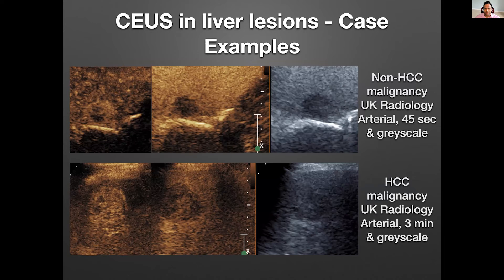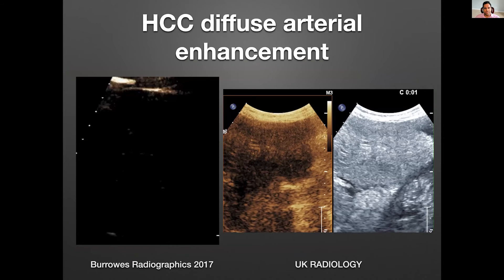Case examples from our university at UK: we see arterial phase enhancement with rim enhancement, and then at 45 seconds you already see washout — with a grayscale image to confirm lesion location. This favors a non-HCC malignancy. Down here, a pretty big lesion with heterogeneous but hyper enhancement on arterial phase, and at three minutes you can see that weak washout. This bottom panel points more towards an HCC malignancy.